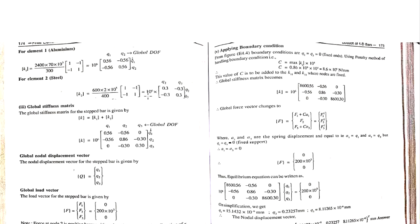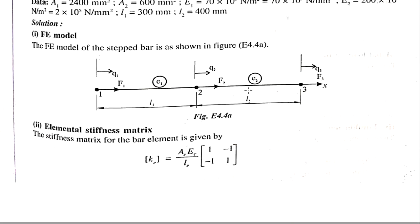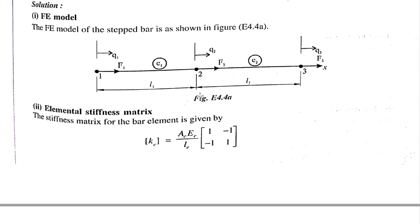For element 2, the steel bar, using area A2, Young's modulus E2, and length 400 mm, the stiffness matrix is (A2·E2/L2) × [1, -1; -1, 1], giving 0.3 × 10⁶ × [1, -1; -1, 1]. The global degrees of freedom for this element are Q2 and Q3.